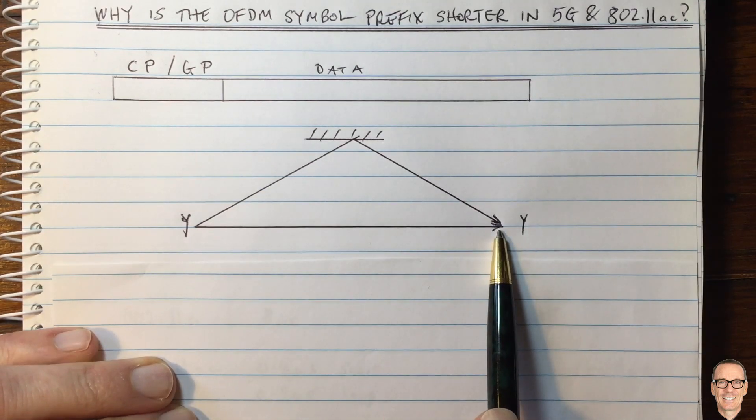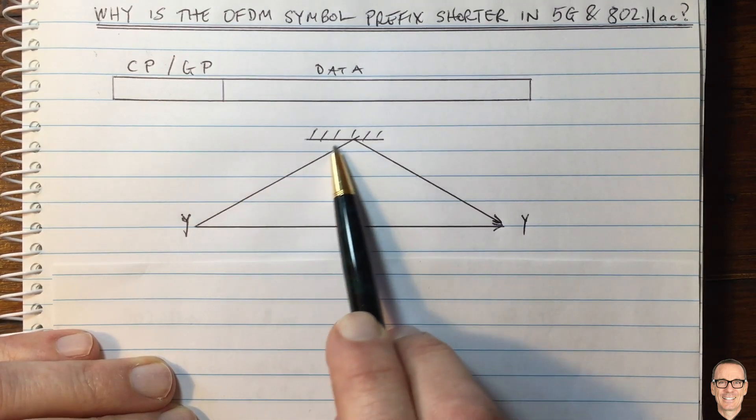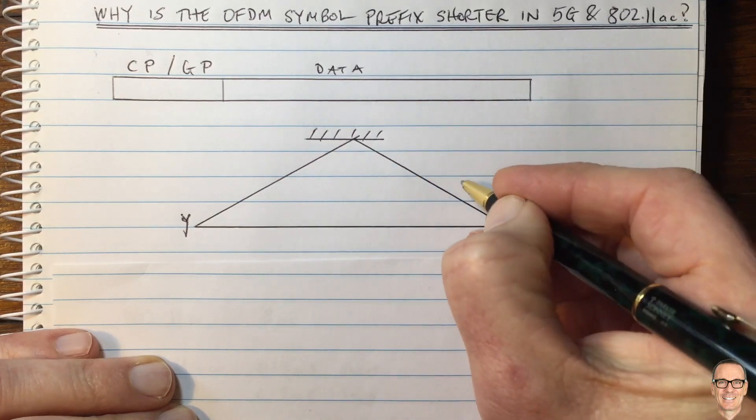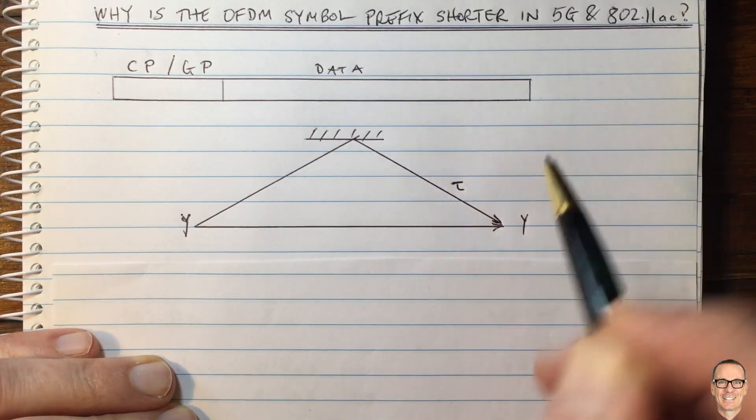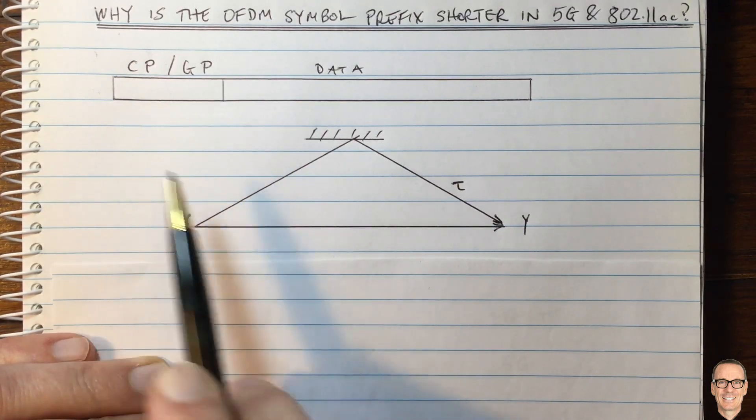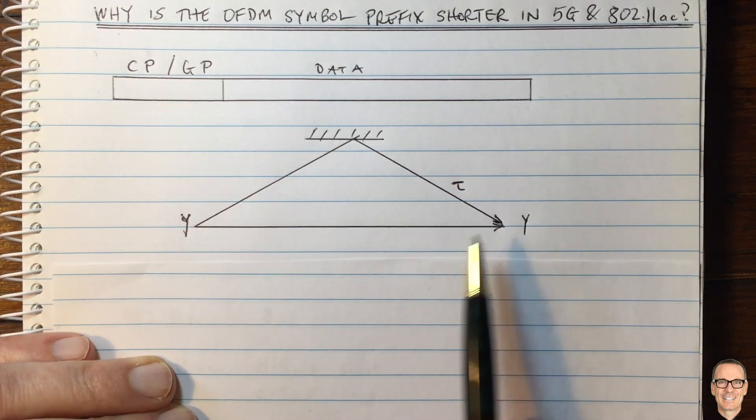There's a direct line of sight in a wireless communications channel but there are also other paths that reflect off reflectors and arrive with delays. We want this prefix time to be long enough to account for all of the delayed paths.